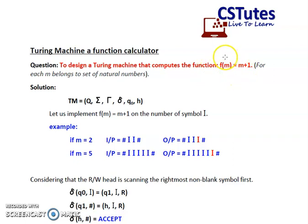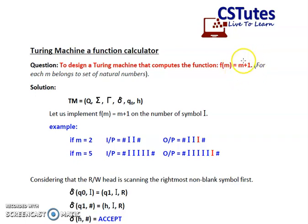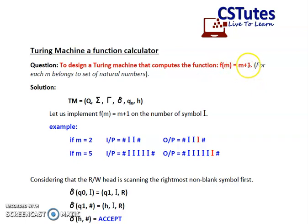This function means that m is the input of the function and it provides the output as m plus 1, that means 1 is added to the input in order to obtain the output, where m belongs to the set of natural numbers. So we need to design a Turing machine that can compute this particular function.